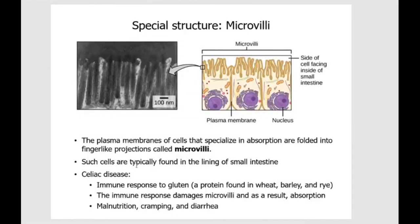The cell membrane can form special structures. One good example is microvilli. Looking at this picture, you can see three intestinal cells. On one side, the cells are attached to a connective tissue layer, and on the other side, they're pointing to the lumen — the empty space in your intestine. The membrane forms finger-like projections called microvilli. Singular is microvillus, plural is microvilli.